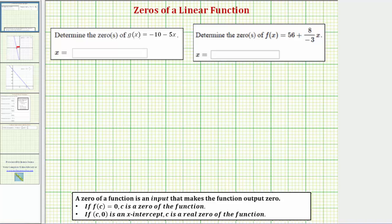It's also true that graphically, if the point (c, 0) is an x-intercept, a horizontal intercept, then c is a real zero of the function.